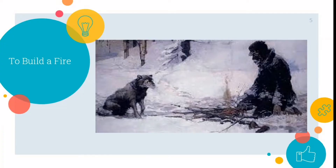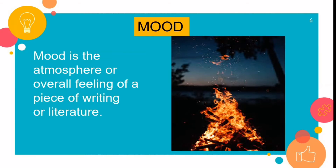In To Build a Fire, the setting is the Yukon Wilderness, and the main character must battle the creeping cold to survive. The setting challenges him in other ways as well. As you read, notice details about this harsh setting and think about the choices the setting forces the character to make. The setting also helps the author create a mood for the story.